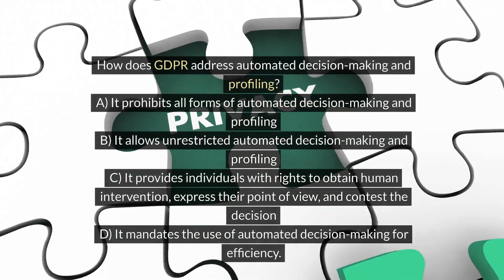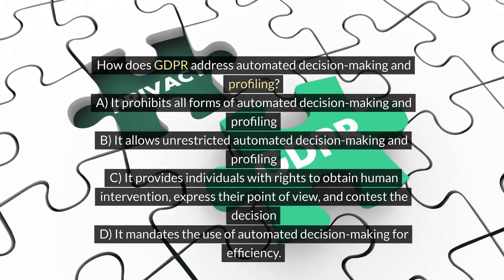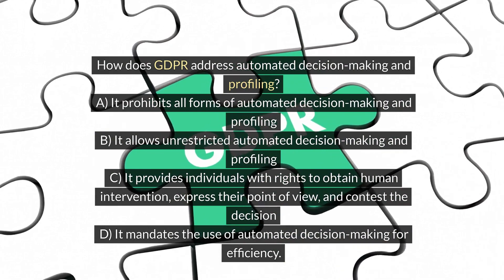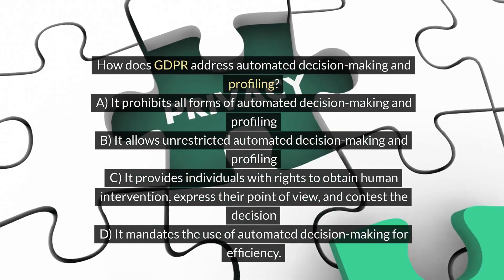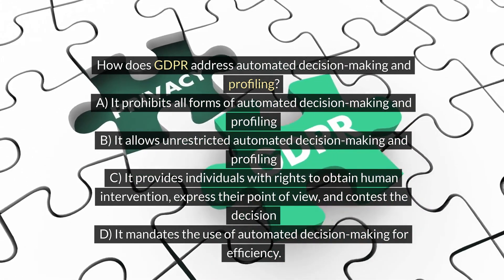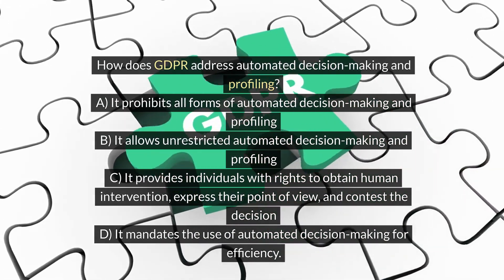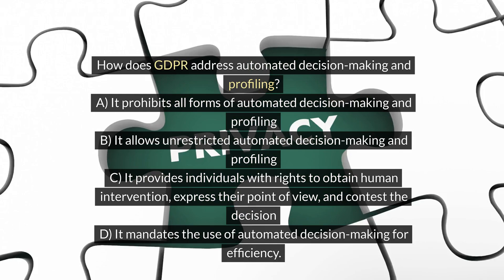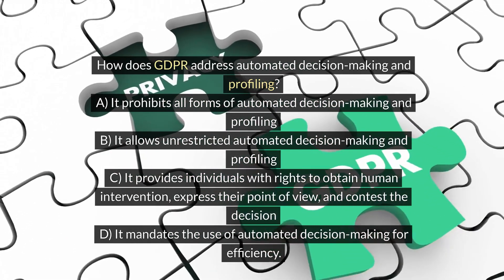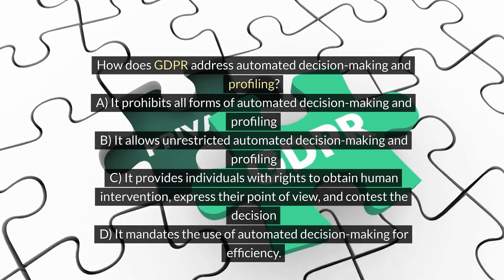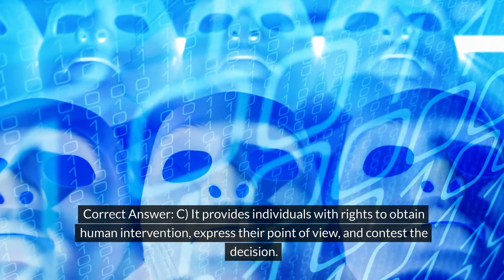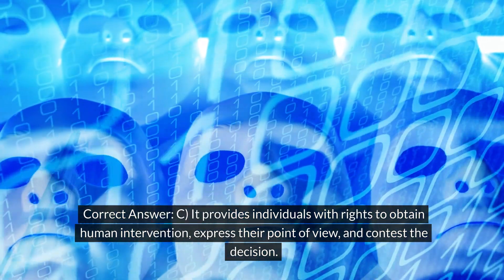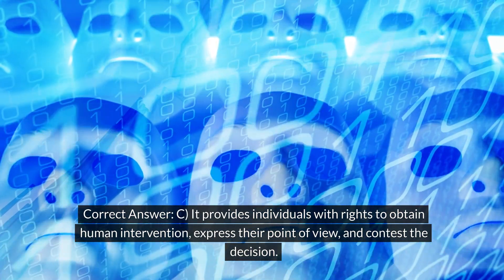How does GDPR address automated decision making and profiling? A. It prohibits all forms of automated decision making and profiling. B. It allows unrestricted automated decision making and profiling. C. It provides individuals with rights to obtain human intervention, express their point of view, and contest the decision. D. It mandates the use of automated decision making for efficiency. Correct answer: C. It provides individuals with rights to obtain human intervention, express their point of view, and contest the decision.